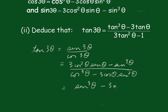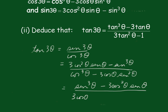I'll have sin³θ minus 3cos²θ sinθ all over — I just like to get rid of these negative signs to begin with because they can cause problems. Now we need a 1, so I'm going to divide numerator and denominator by cos³θ.